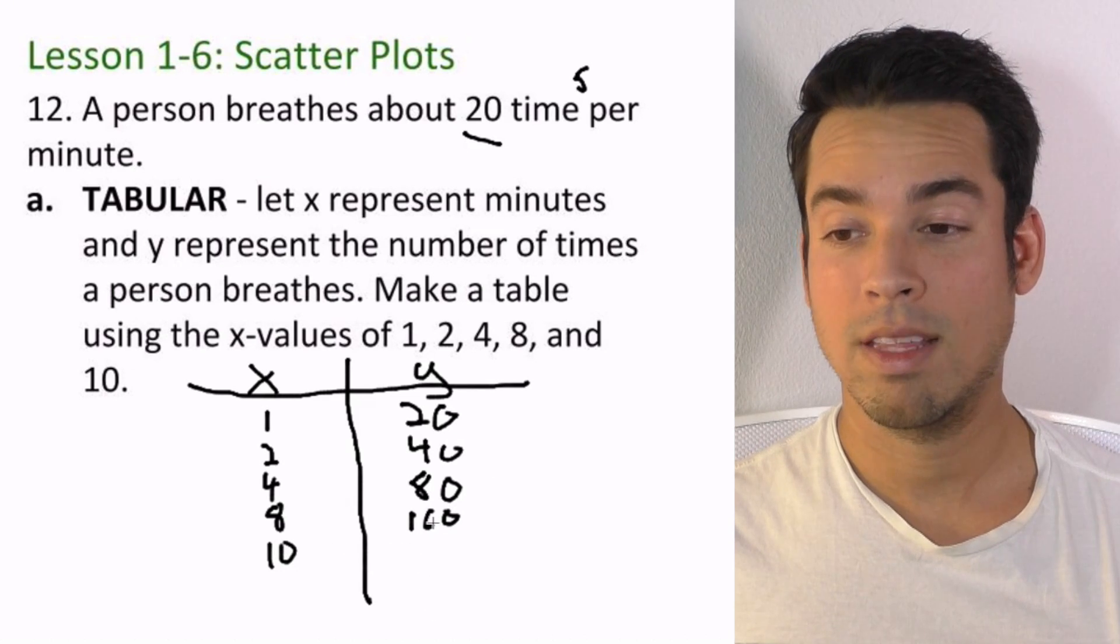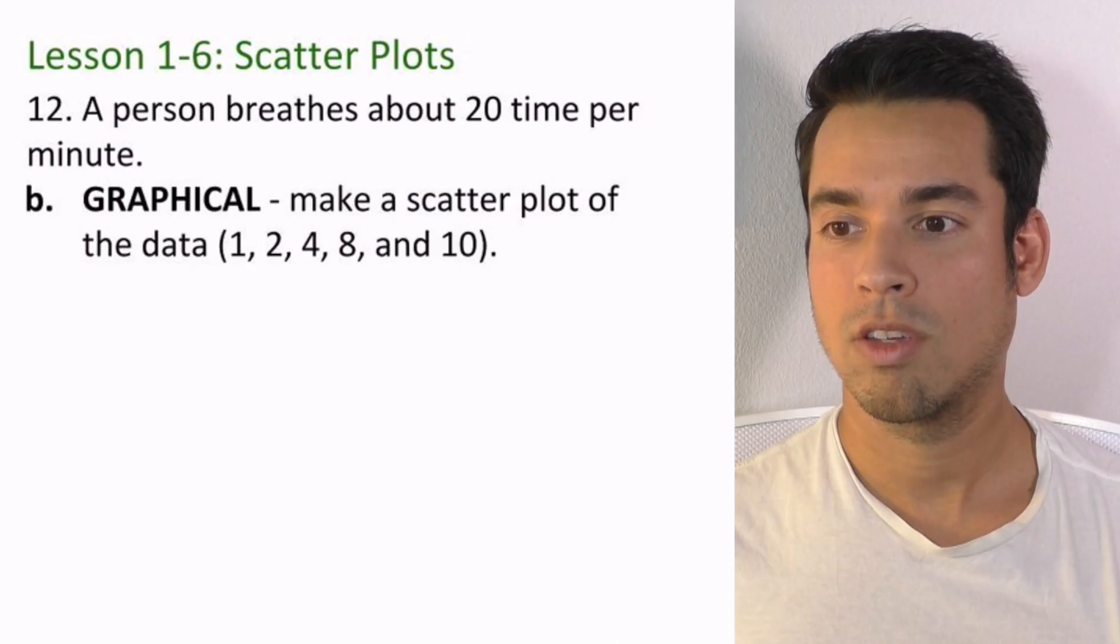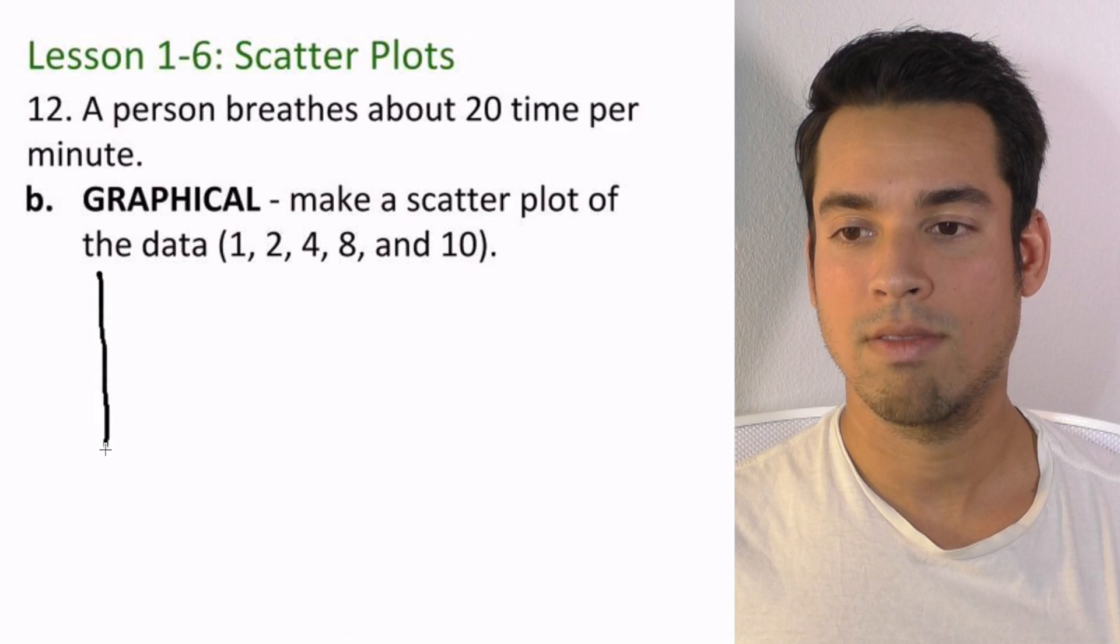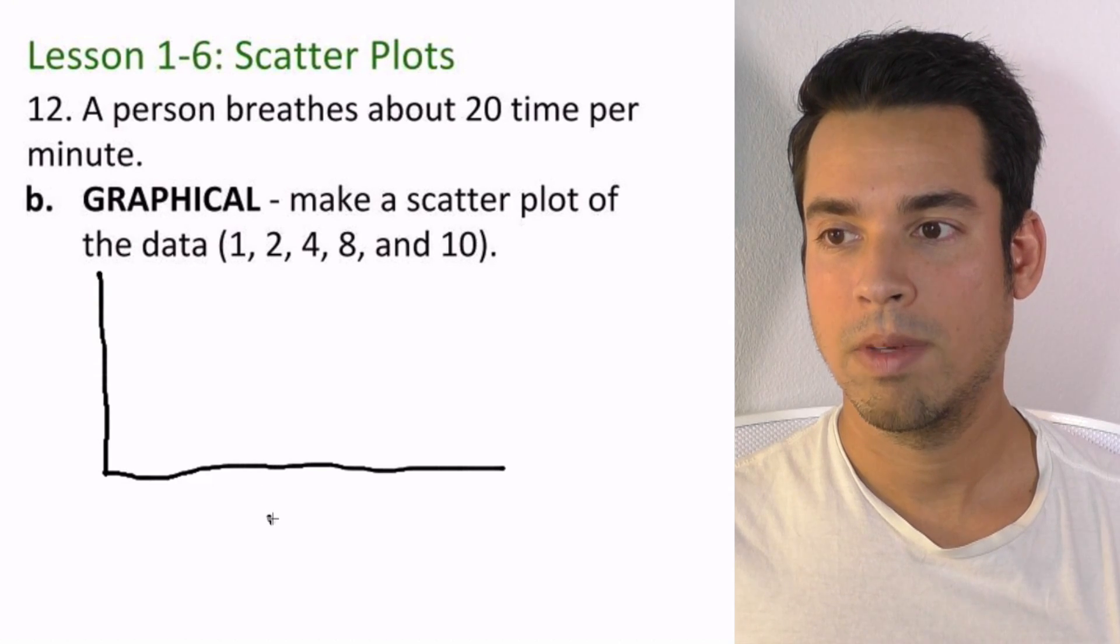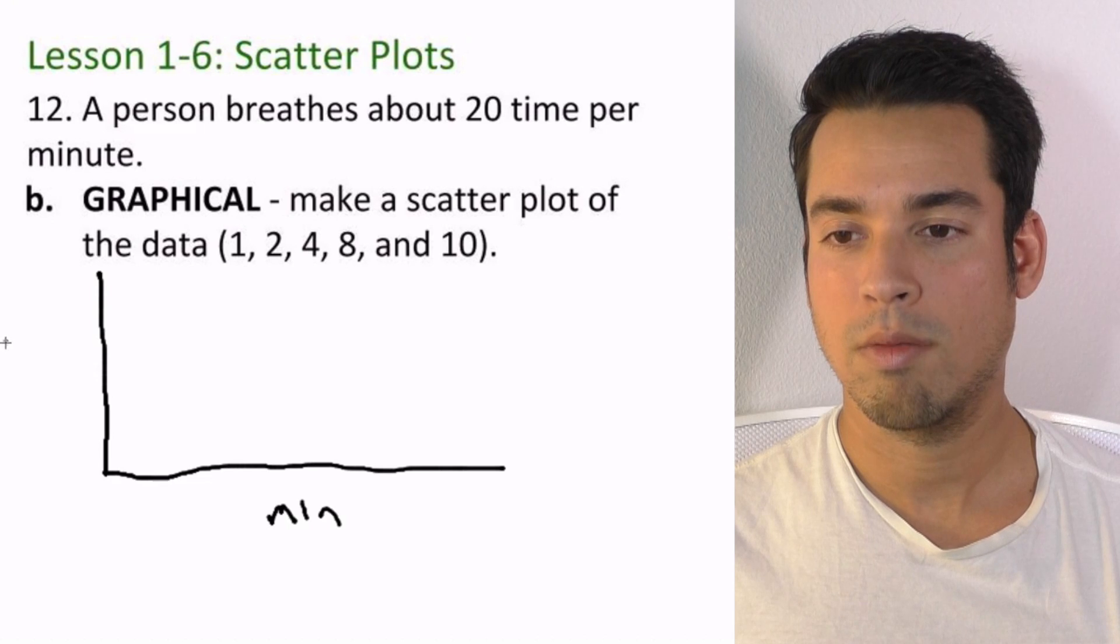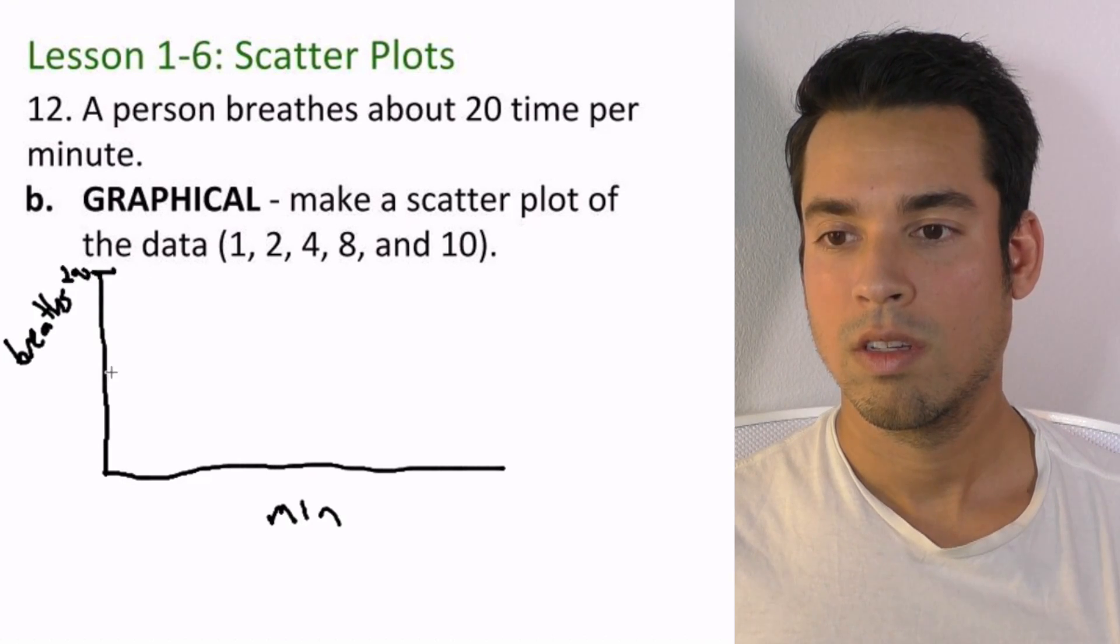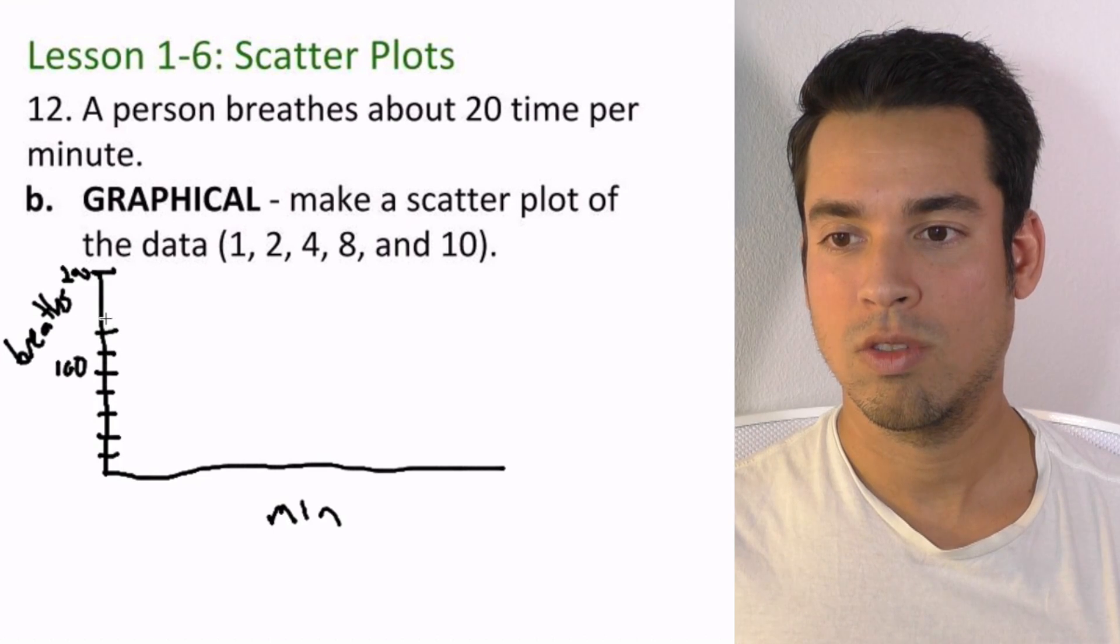Let's go on to the next part. Make a scatter plot of the data. So again, we're going to have time, the minutes, we're going to have that on our x-axis. So we'll say minutes here and we'll say breaths here. And it looks like the max we're going up to is 200, so I'm going to do my best here to try and make this work. We got 100, we got 80, 60, 40, 20. It's not perfect but it'll do. And then let's do the same thing up here: 1, 2, 3, 4, 5.